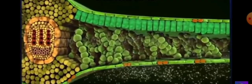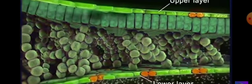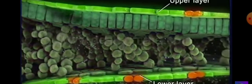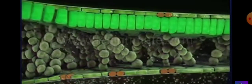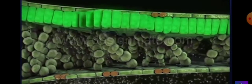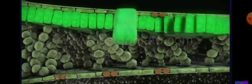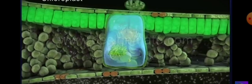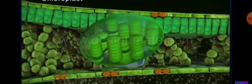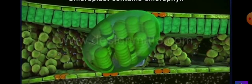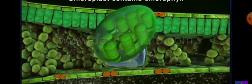A cross section of the leaf shows the upper and lower layers of cells which are flat and irregular. Below the upper layer is the layer of tightly packed cells. These cells have specialized organelles called chloroplasts. Chloroplasts contain the pigment chlorophyll, which gives the green color to the leaf.